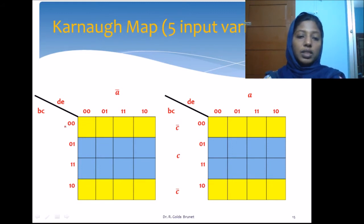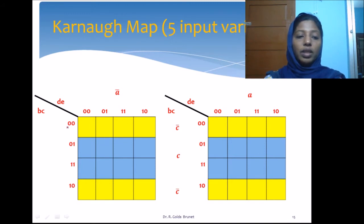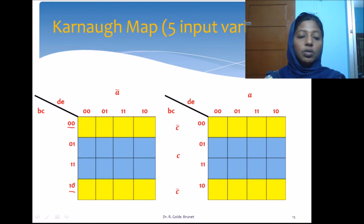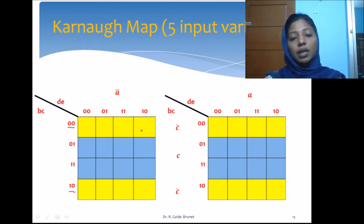Why C-bar? When the block spans across both maps, A will not appear because A is A-bar in one map and A in the other. Along the row we have 0,0 and 1,0, so B is varying and will not appear. C remains the same with value 0, so it is C-bar. The block appears across all 4 columns, so D and E are varying and won't appear. The block is simply C-bar.